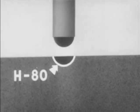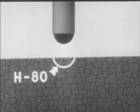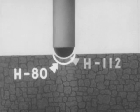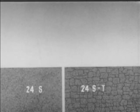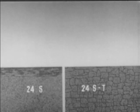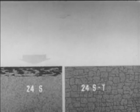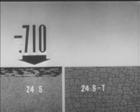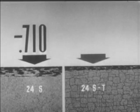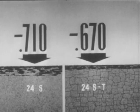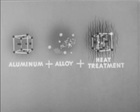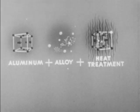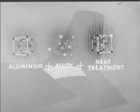We may find that the Rockwell hardness number of the part has increased from H80 to H112. And we would also find that the alloy's resistance to corrosion has increased, as shown by a change in solution potential test reading from minus 0.710 millivolt to minus 0.670 millivolt. Thus, solution heat treatment has affected the desirable change in the physical properties of an aluminum alloy by controlling the size and distribution of the particles of the alloy constituents.